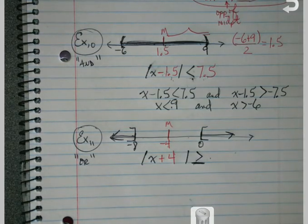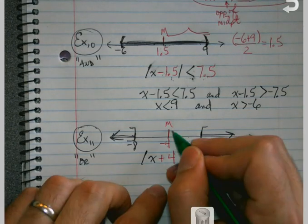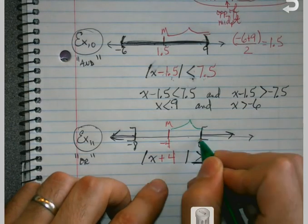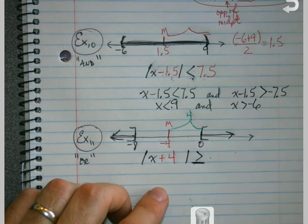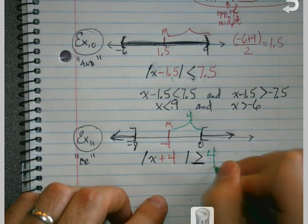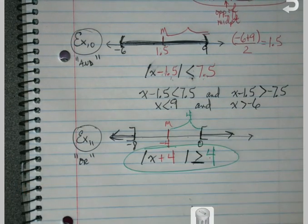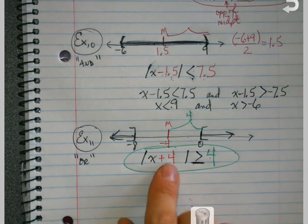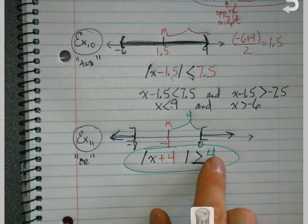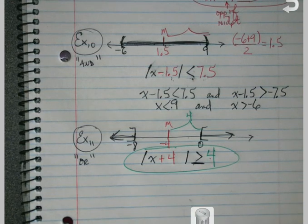Well, then what about the distance? Same thing. Distance is always positive. So how far is it from negative 4 to 0? It's 4. And I'm done. So just an opposite in here. And then my distance to get to my value on the outside. That's all we're doing with those.